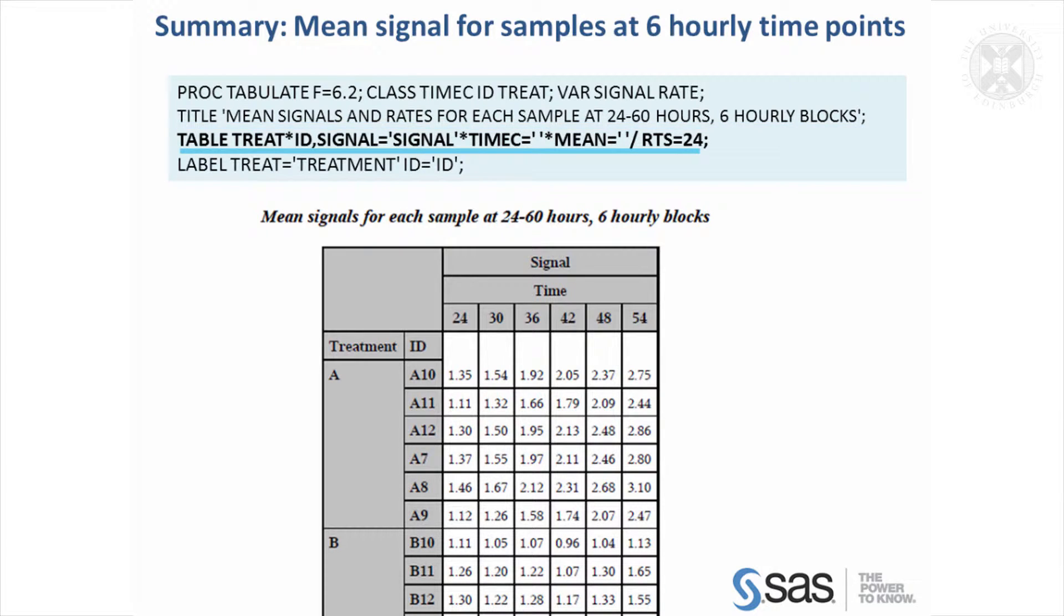The table statement is where you give the structure of the table, so we've got along the rows, we're structuring it by treatments and in this one by the sample ID as well, so we're getting the means for each of these time point blocks.